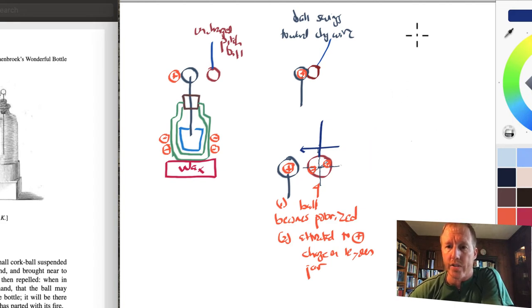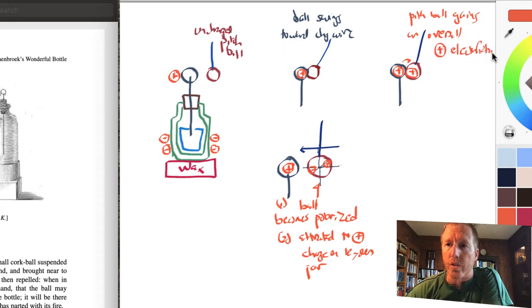Now, what happens after it touches it? Well, once it touches it, then some of the positive charge that is inside of this positively charged ball is leaked onto by contact. It goes onto this, so this becomes positively charged. So now the pith ball gains an overall positive electrification. It's no longer neutral. And because it gains an overall positive electrification, and positives repel positive, there's a force of repulsion, and it swings away.